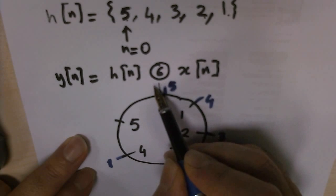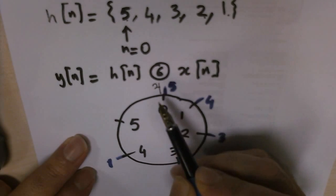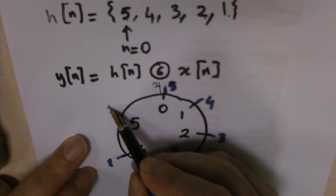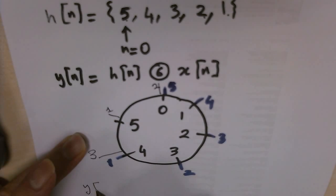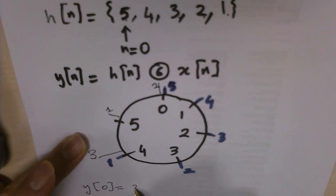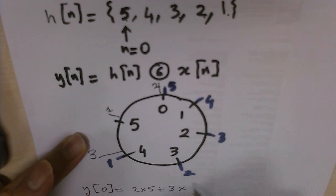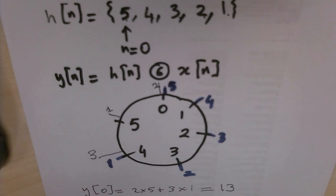So we first start with that, so it's right here: 2, 1, and 3. This is my starting point, so my y[0] is 2 times 5 plus 3 times 1, so that's 13. This is my y[0].